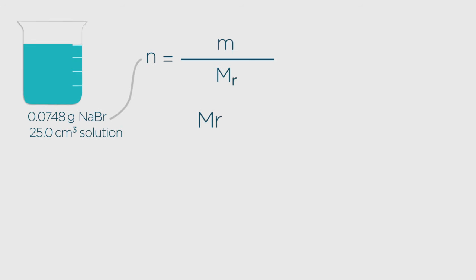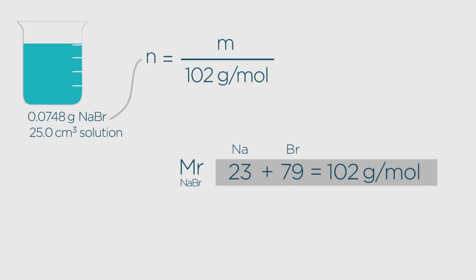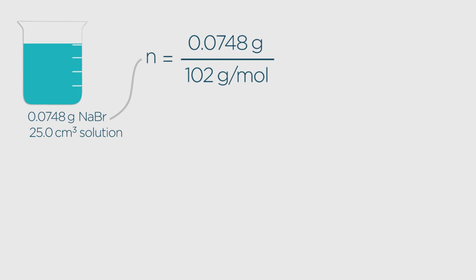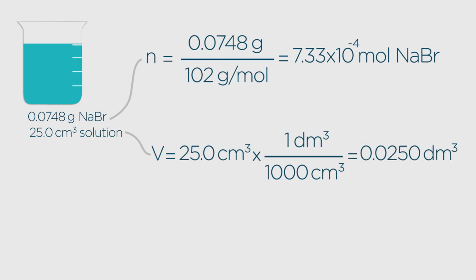So, molar mass of sodium bromide is 23 plus 79 equals 102 grams per mole. 0.0748 divided by 102 equals 7.33 times 10 to the minus 4 moles. 25 divided by 1000 equals 0.025 decimetres cubed.